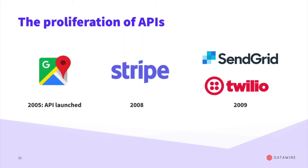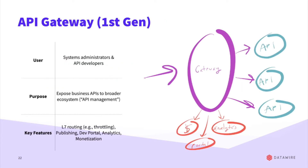Around 2010, with the rise of the iGeneration and the proliferation of APIs — a lot of work with Google Maps, Stripe and so forth — this is when we started to see the API gateway pop up. The target now was not only sysadmins but API developers too. Kong and Mashape started popping up. There was an ecosystem developing around monetizing APIs. This gateway evolved around that concept, looking more at the Layer 7 protocol, particularly HTTP, routing based on HTTP headers. There was lots of interest around dev portals, analytics, and monetization.